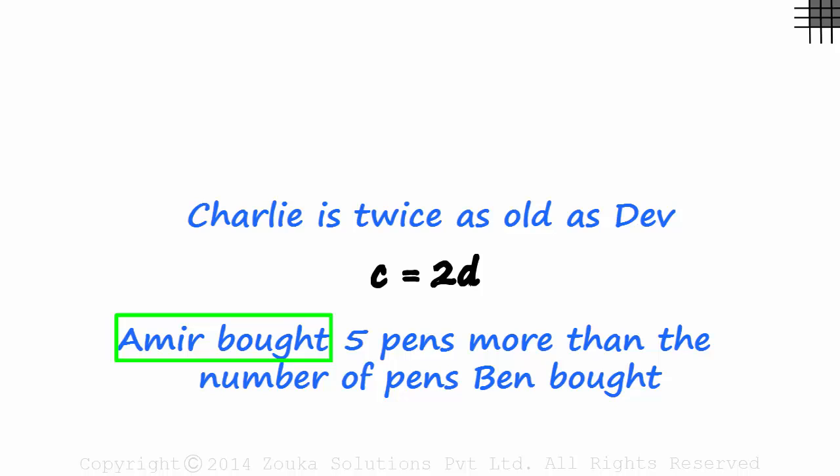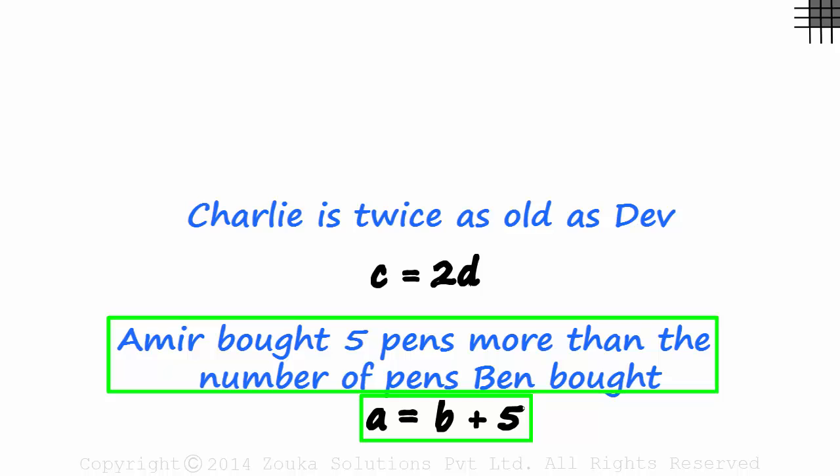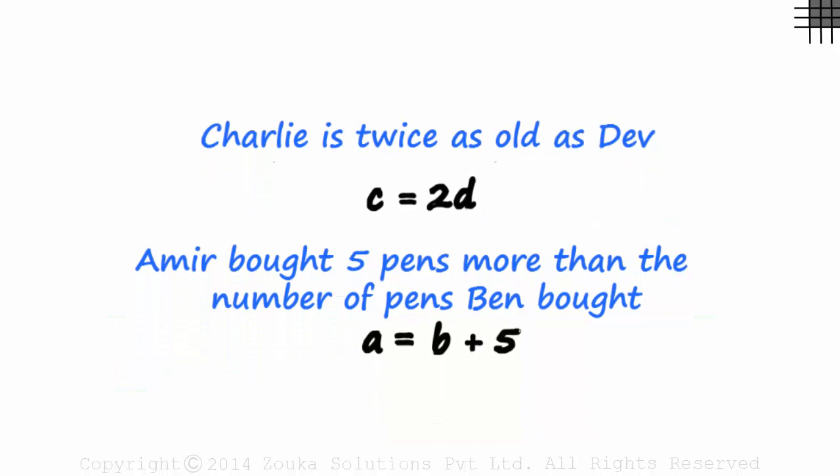Armour bought can be written as A equals five pens more than some number. So we leave some space and write plus five. Five more than what? Five more than the number of pens Ben bought which is B. So A equals B plus five explains this line in a shorter way. Easy you think?